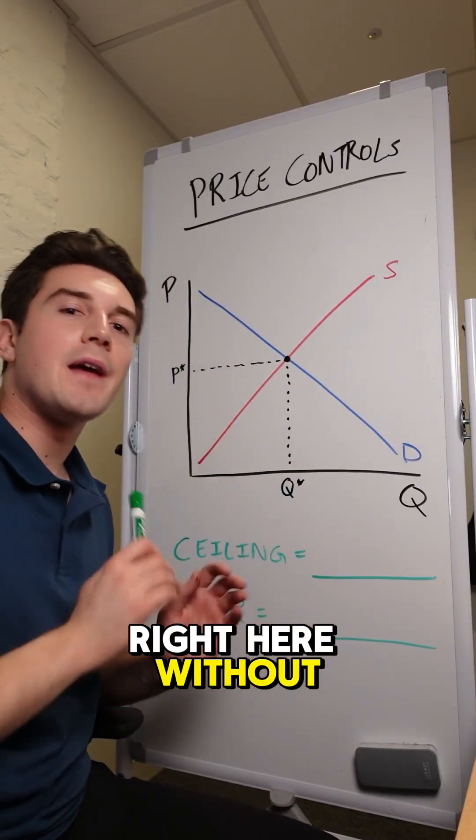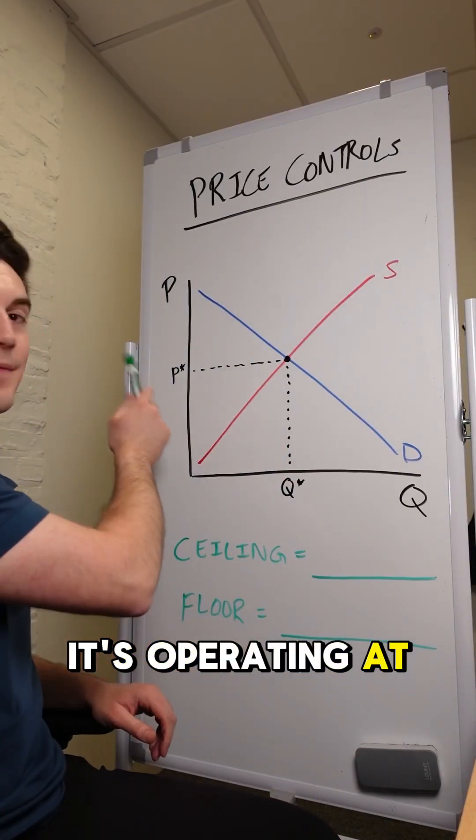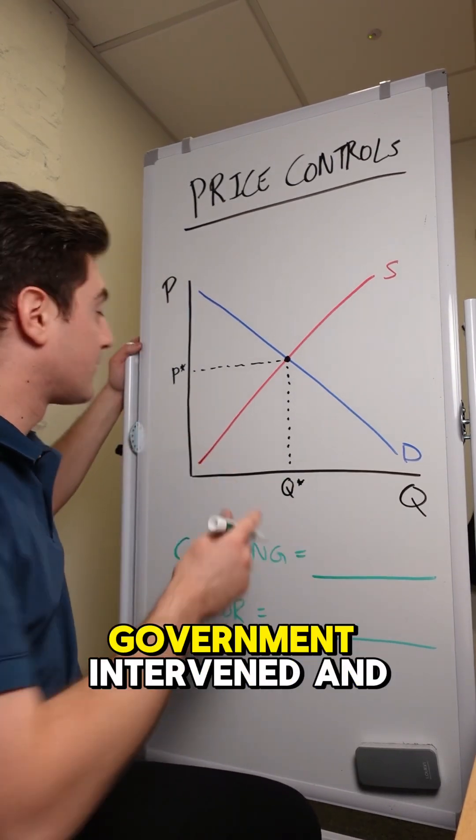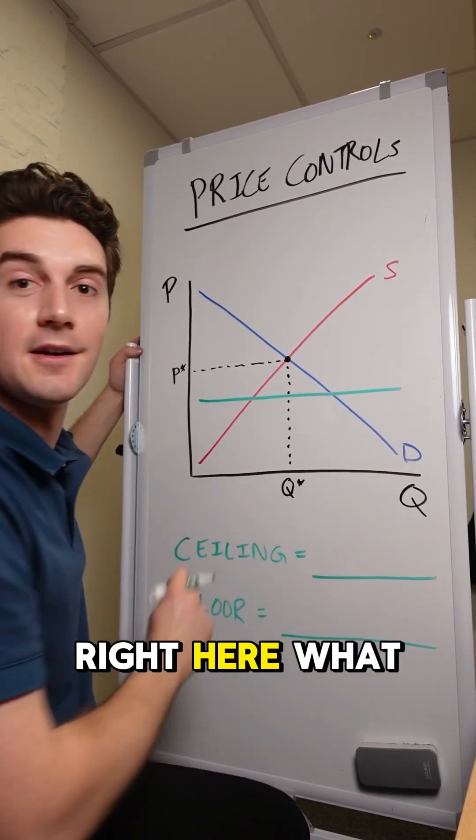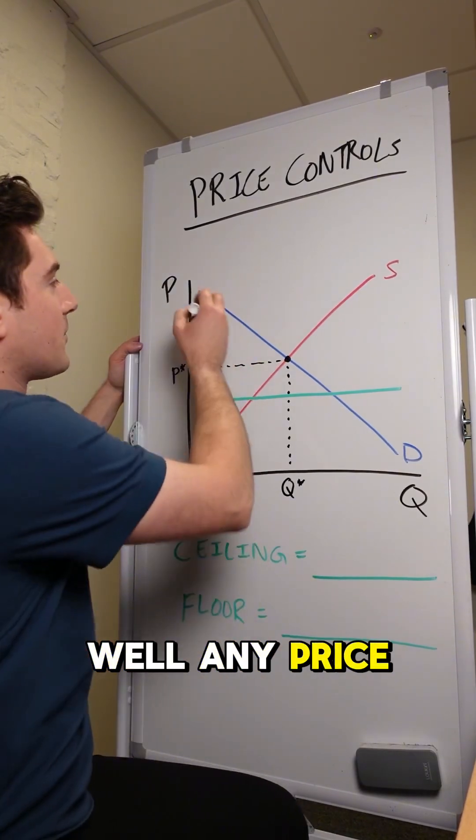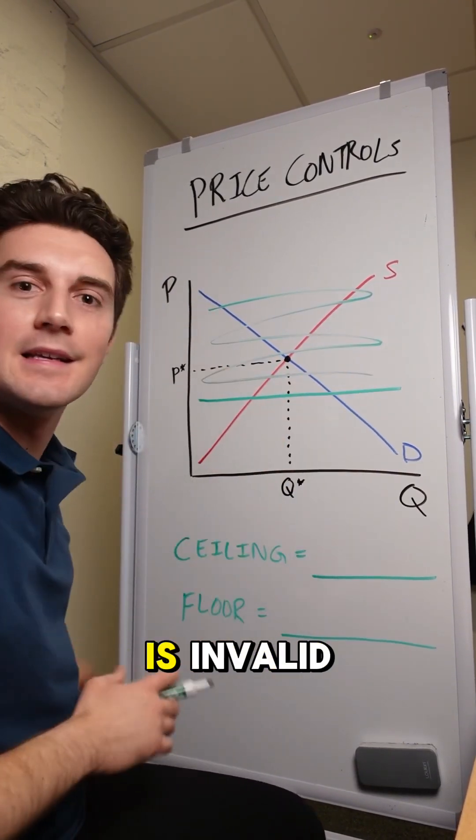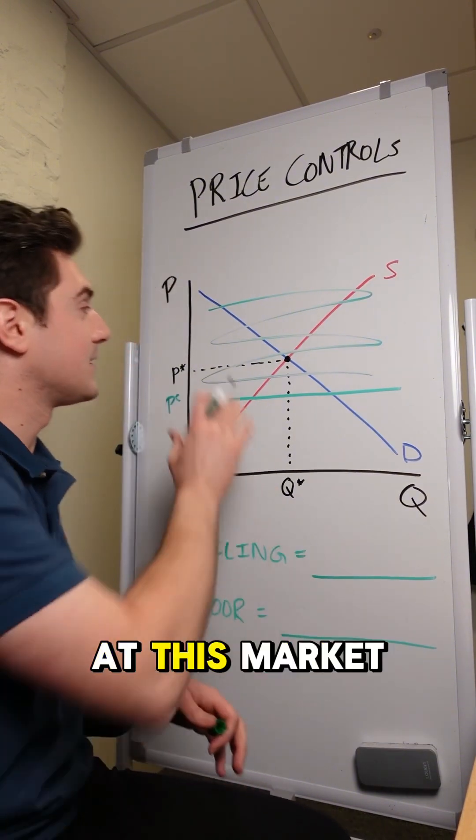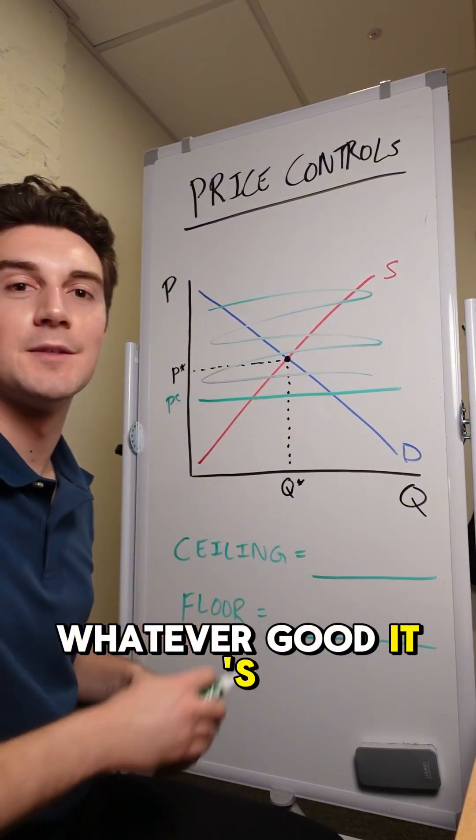In this market right here, without any price controls, it's operating at this equilibrium price and this equilibrium quantity. But let's imagine the government intervened and set a price ceiling right here. What would that do? Well, any price above that point is invalid because this price ceiling right here is the highest price that this market can sell whatever good it's pertaining to at.